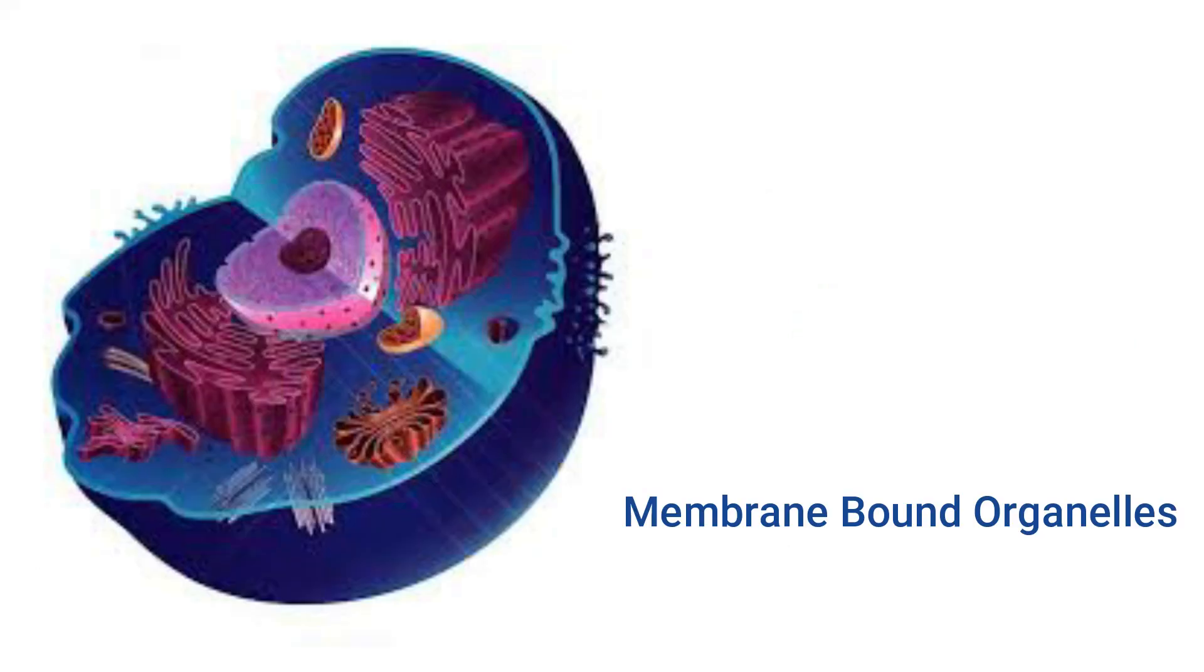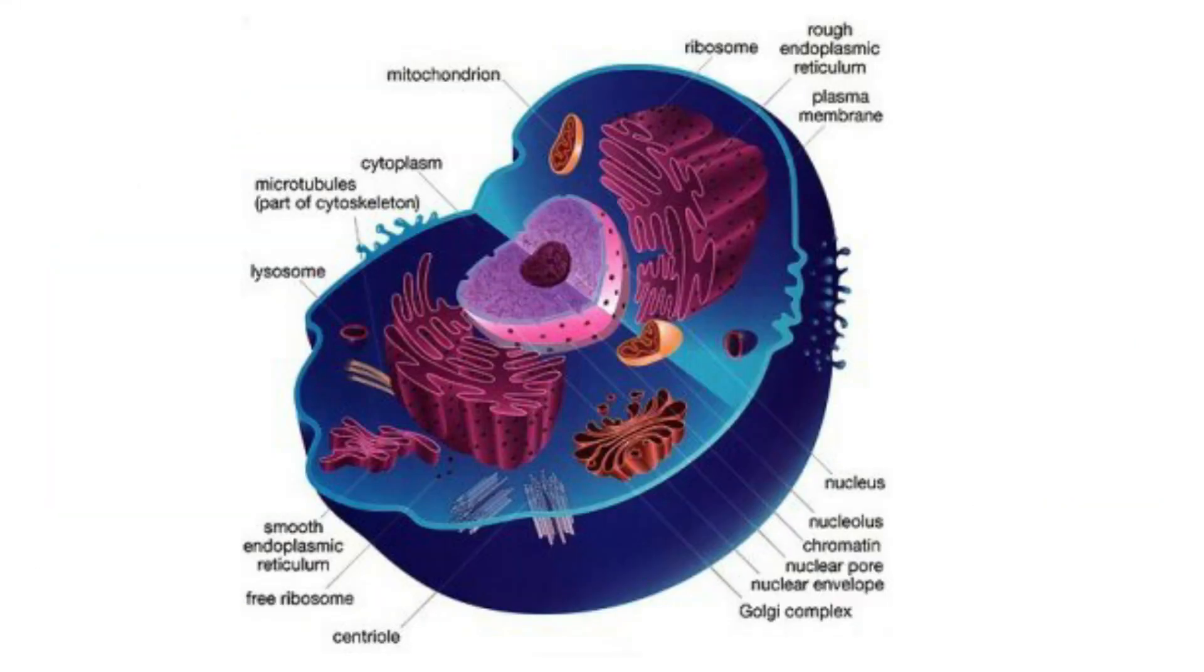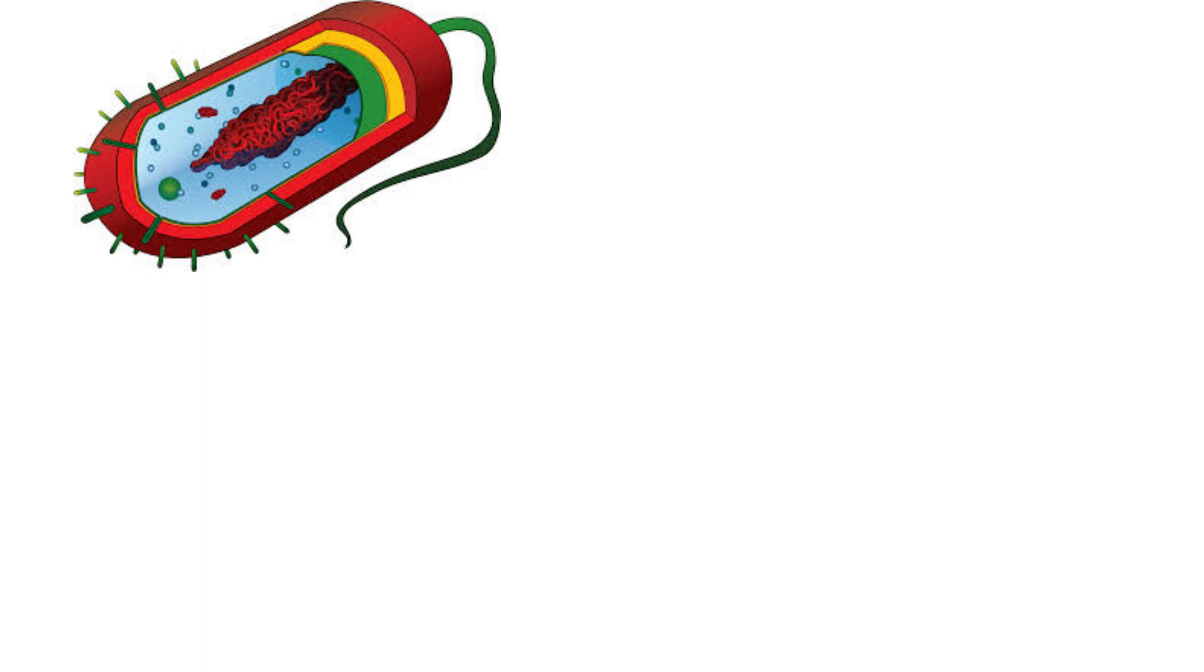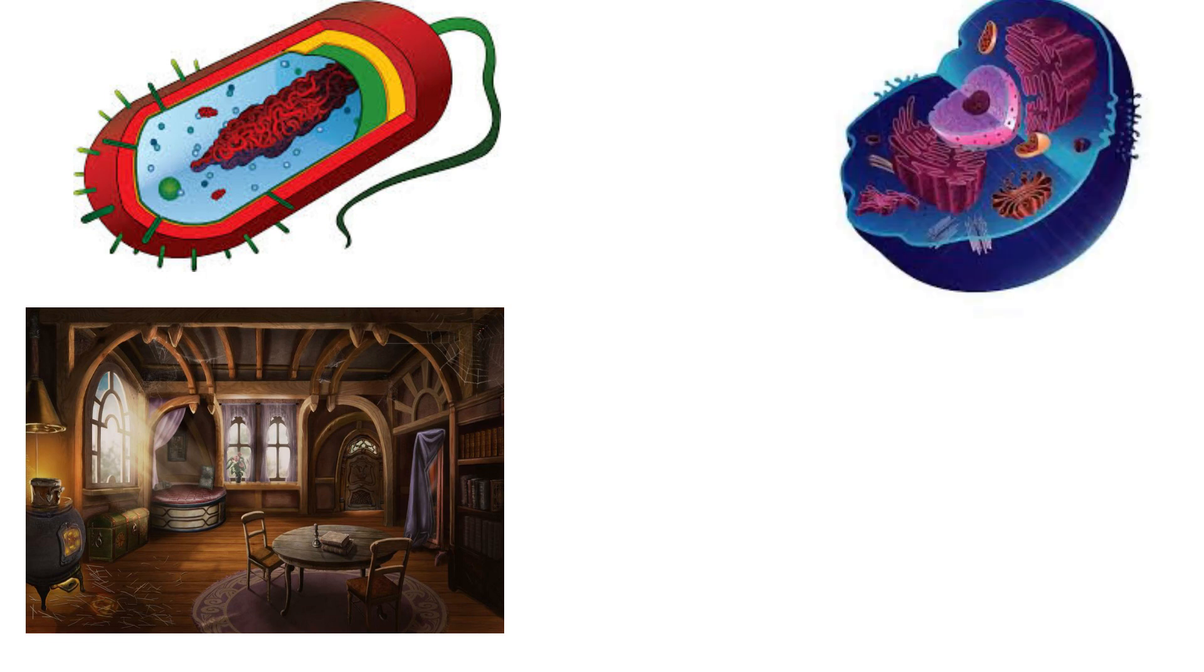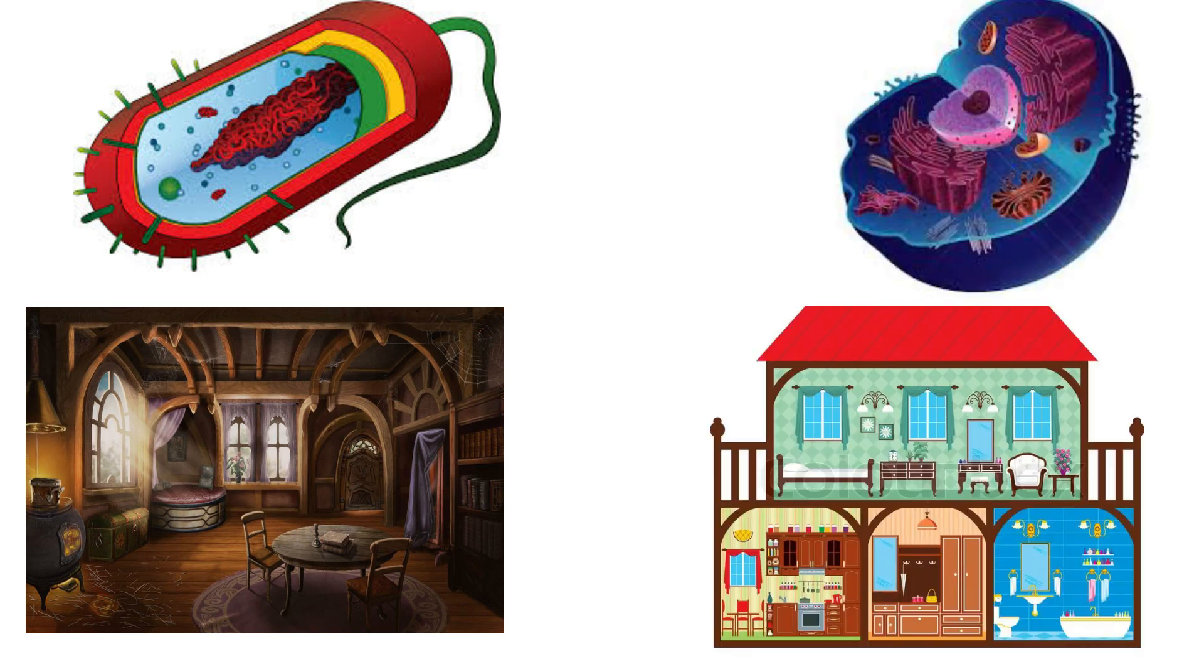Unlike prokaryotes, eukaryotes have internal membranes that divide the cell into compartments or organelles. The separation of these organelles allow for different environments within the cell that enable many different processes to occur simultaneously. So whereas a prokaryotic cell is like a one-room cabin where everything is close together and there are no defined rooms, a eukaryotic cell is like a house where there are different rooms and each room has its own purpose.